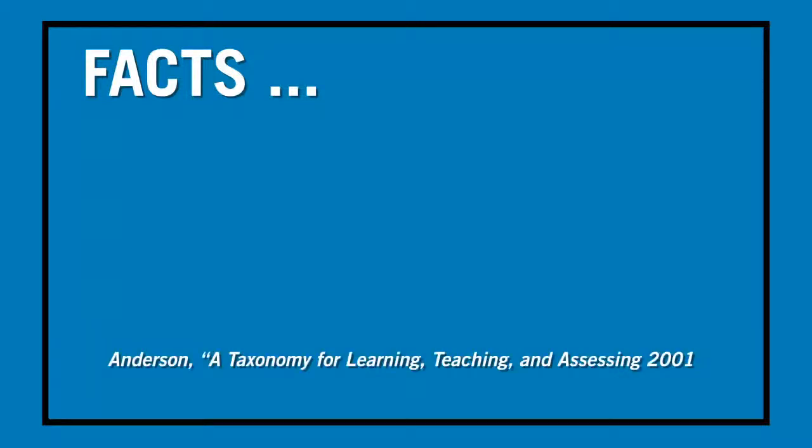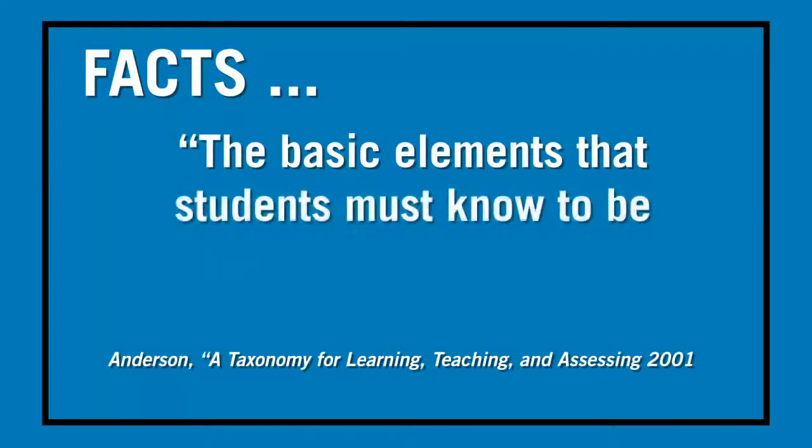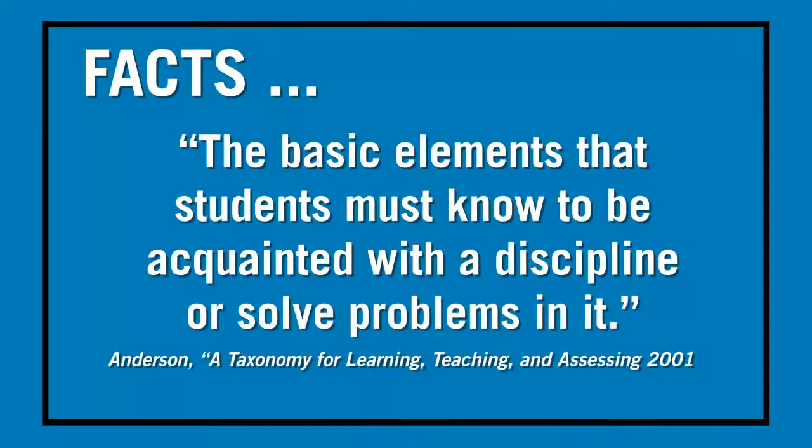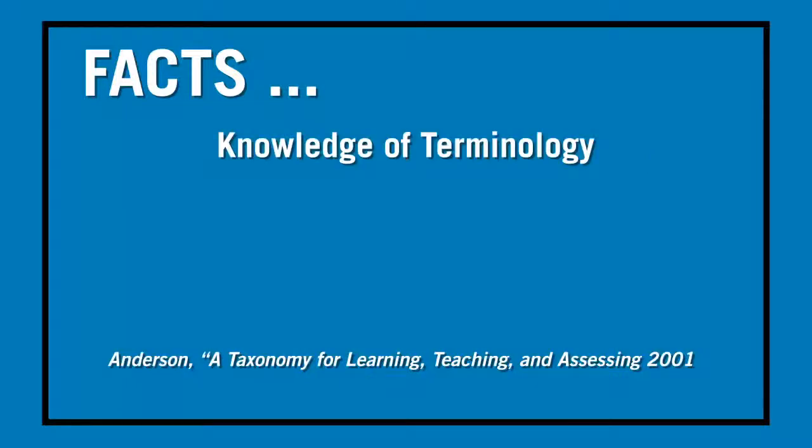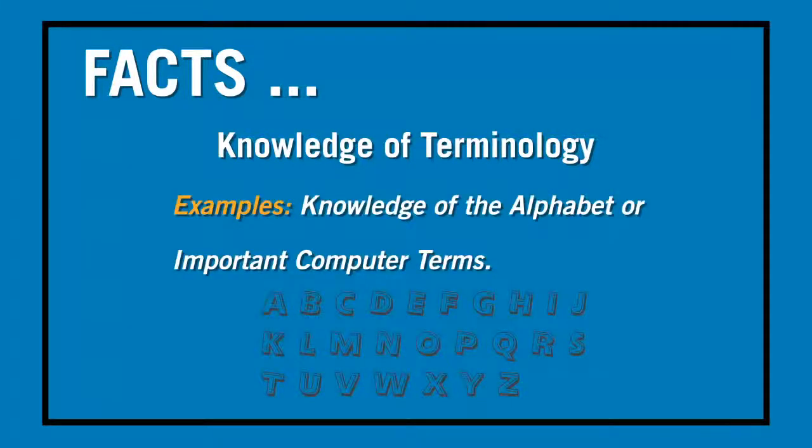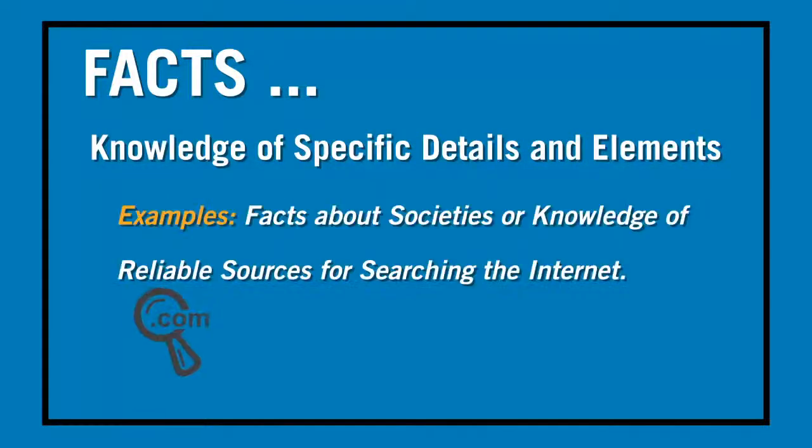Anderson and others suggest that facts are the basic elements that students must know to be acquainted with a discipline or solve problems in it. They suggest there are two types of sub-knowledge related to facts: knowledge of terminology and knowledge of specific details and elements. Some examples of knowledge of terminology may include knowledge of the alphabet or important computer terms. Examples of specific detail and elements knowledge may include facts about societies or knowledge of reliable sources for searching the Internet.